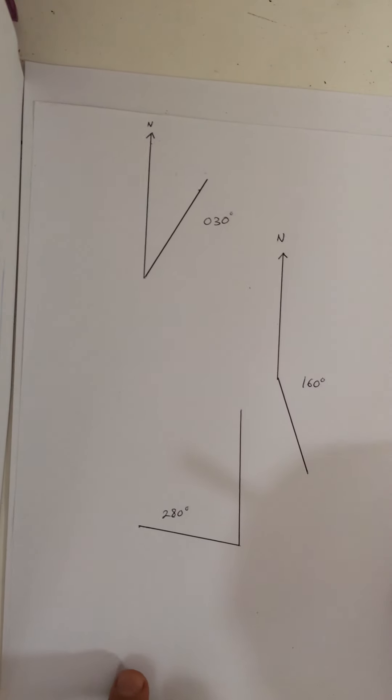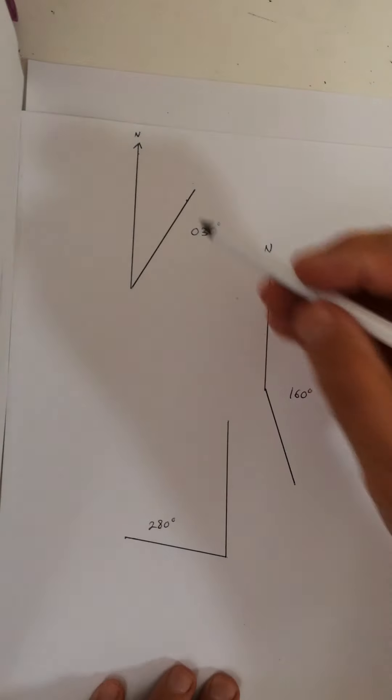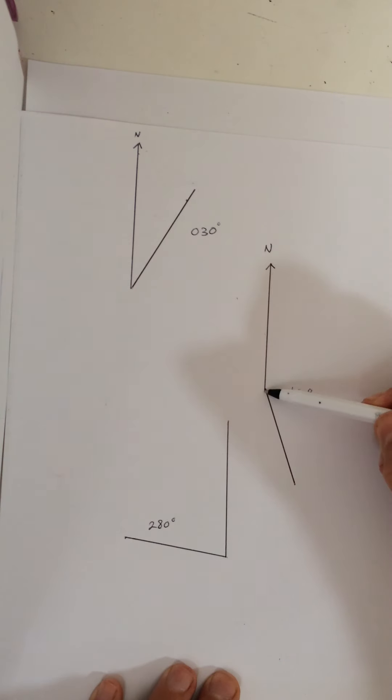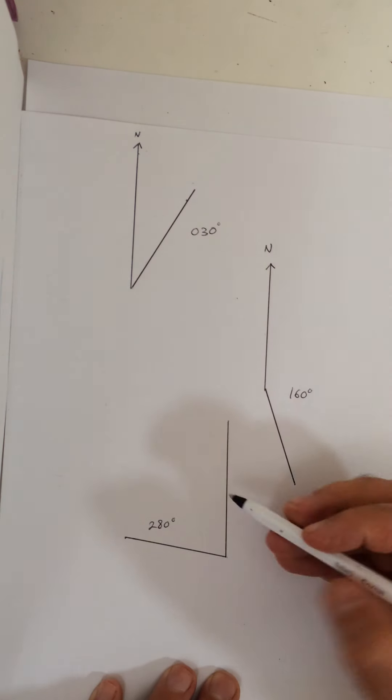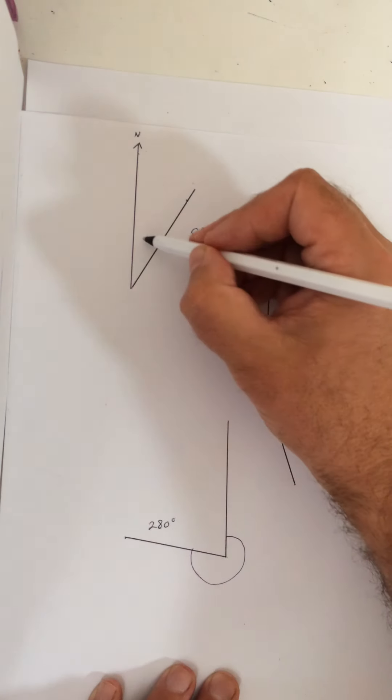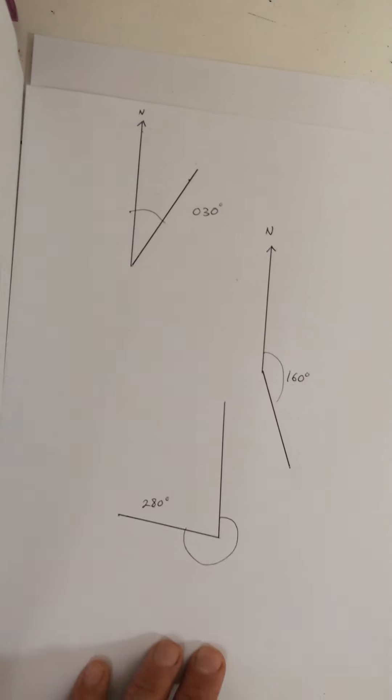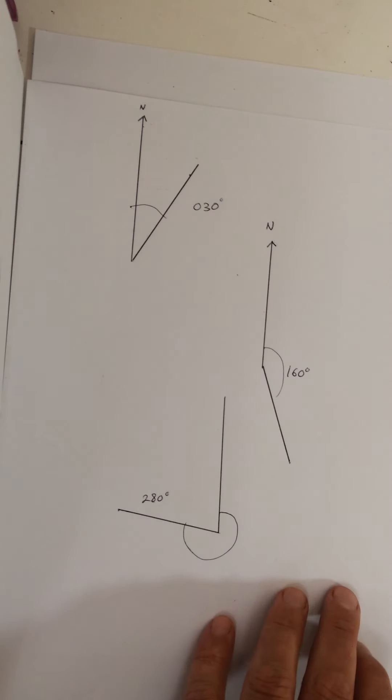All right. So your bearings should have looked a little bit like this. There's your 30 degree bearing. There's your 160 degree bearing. There's your 280 degree bearing. Remember it's coming around this way. This is the angle there. Hopefully you're okay with those. So that's just drawing a simple bearing.